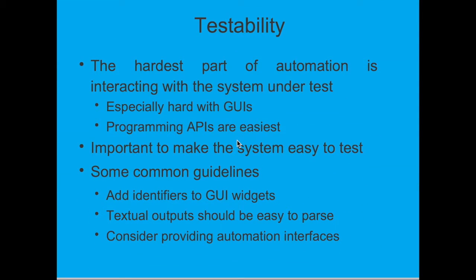Testability: the hardest part of automation is interacting with the system under test, especially with GUIs. With a programming API, it is a little bit easier. It is very important to make the system easy to test. Some common guidelines: add identifiers to GUI widgets, ensure textual outputs are easy to parse, and consider providing automation interfaces.